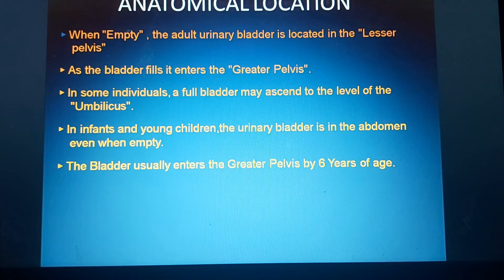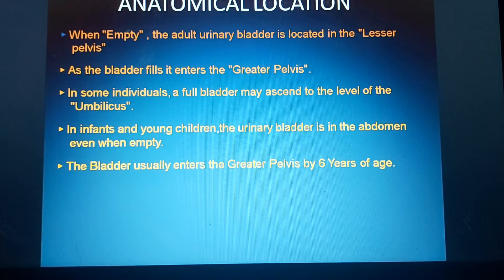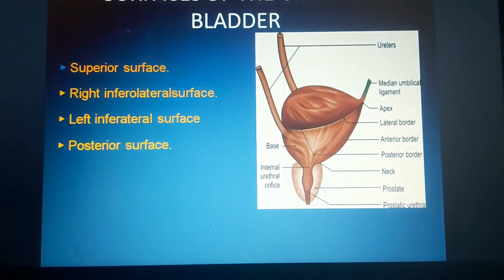Coming to the anatomical location of the urinary bladder: when empty, the adult urinary bladder is located in the lesser pelvis; as the bladder fills, it enters into the greater pelvis. In some individuals, a full bladder may ascend to the level of the umbilicus. In infants and young children, the urinary bladder is in the abdomen even when empty, and it usually enters the greater pelvis by the age of six years.